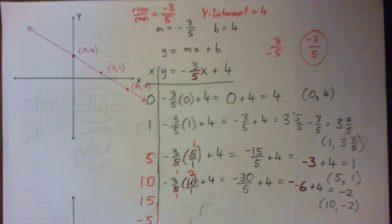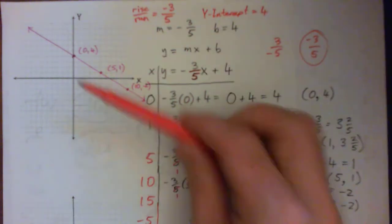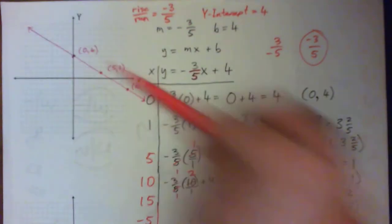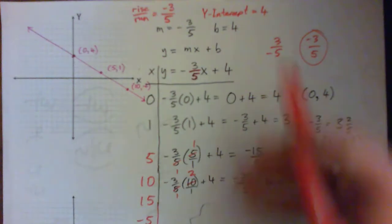If we didn't do a table, the other way would be to first find where it hits the Y axis, where the line intercepts the Y axis. The Y intercept is at 4. So where is that? Up here on the dot where the 4 is. Perfect.